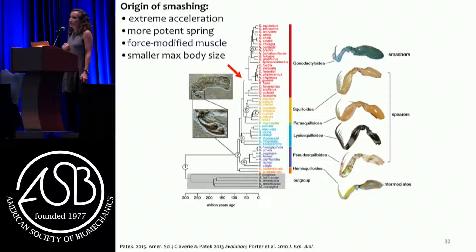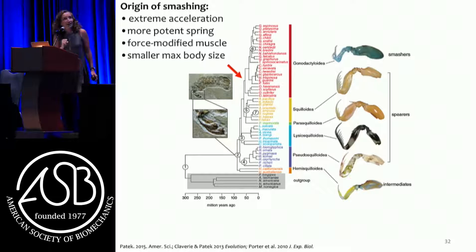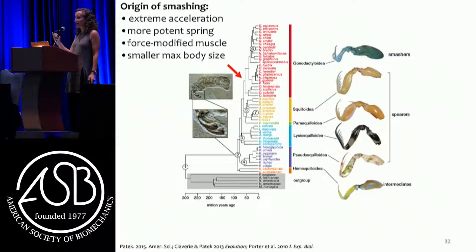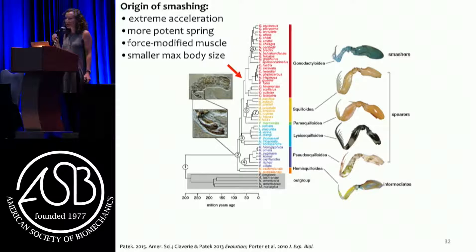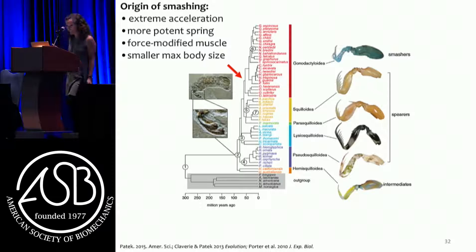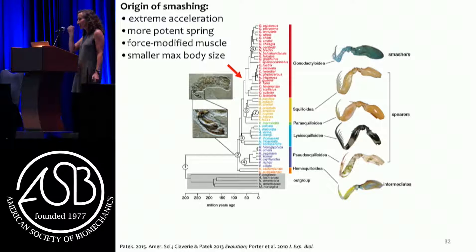Smashers are modified spearing mantis shrimp - and interestingly, larval baby smashing mantis shrimp start as spearers and then turn into smashers. With the origin of smashing came extreme acceleration, a more potent spring, force-modified muscle, and smaller maximum body size. Why did mantis shrimp essentially collapse their size range when they moved to smashing? Borrelli, Huxley, and Vogel have all asked why the best acceleration performance only happens in tiny animals. Here in the mantis shrimp we see a drastic compression of body size with the transition to smashing.